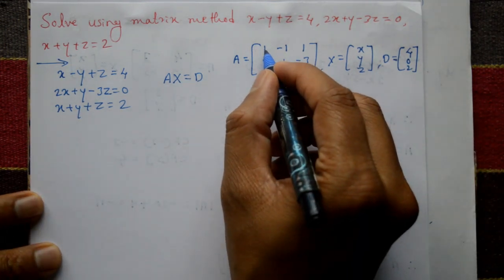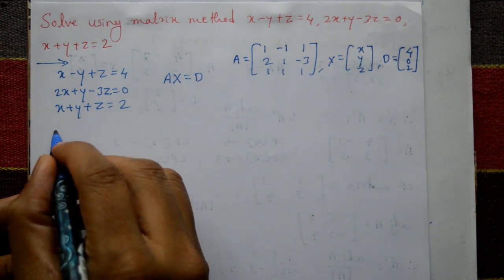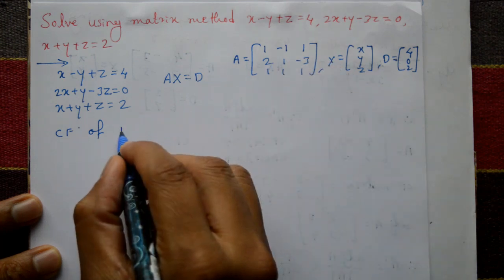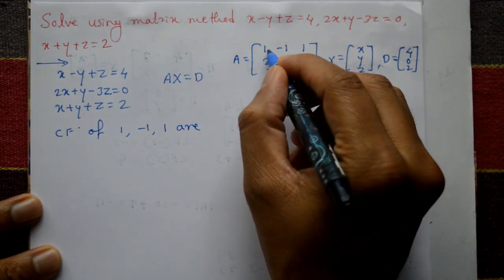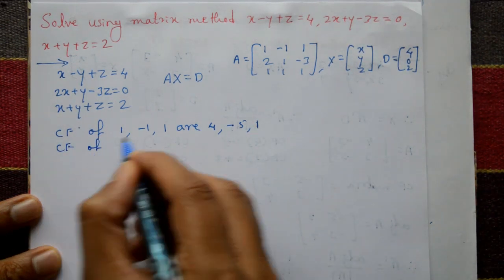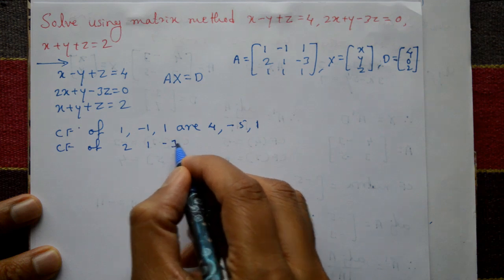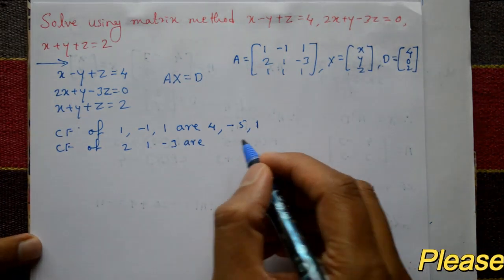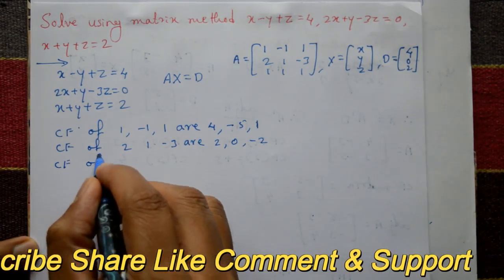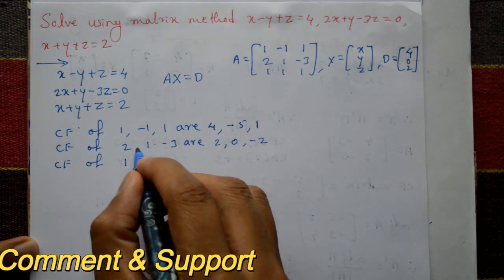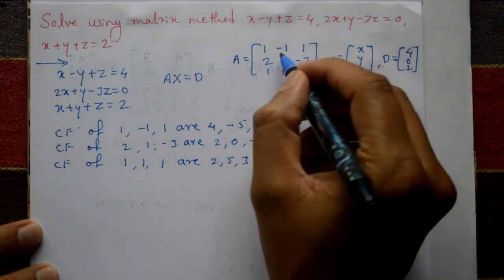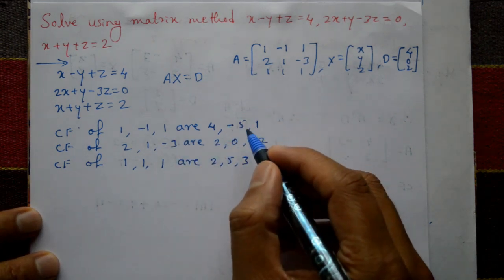Now taking the co-factor of each element: the co-factor of the first row [1, -1, 1] gives 4, -5, 1. The co-factor of the second row [2, 1, -3] gives 2, 0, -2. The co-factor of the third row [1, 1, 1] gives 2, 5, 3. How to find co-factors of these elements has already been solved and uploaded in previous videos — please check those.